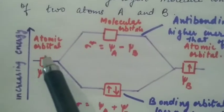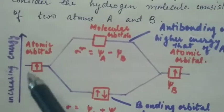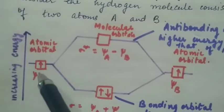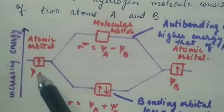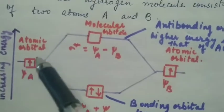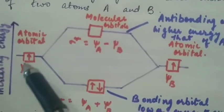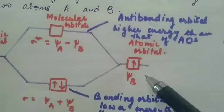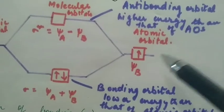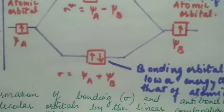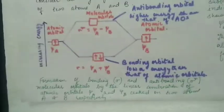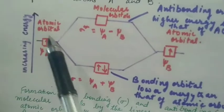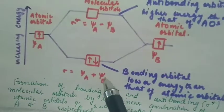In the hydrogen molecule, atom A has the electronic configuration 1s¹, so there is one electron in the 1s orbital. The amplitude of the wave function of this electron is ψA. Similarly, the amplitude of the wave function of atom B in the hydrogen molecule is ψB. These two will combine to form two molecular orbitals.